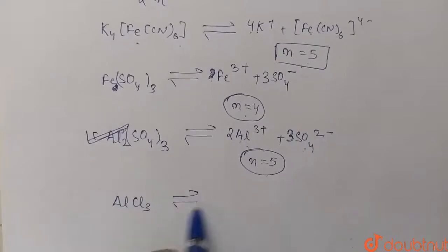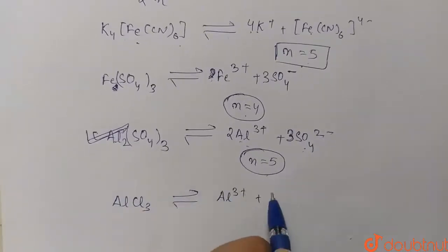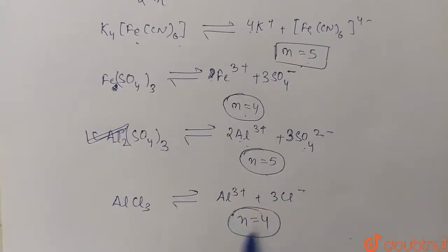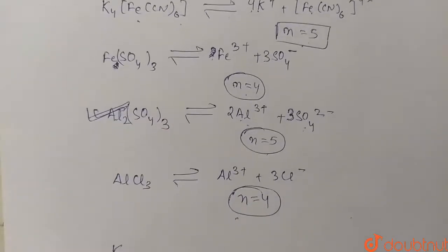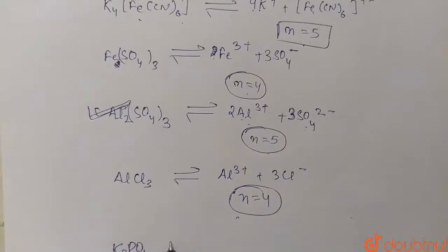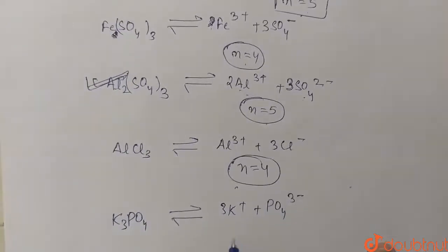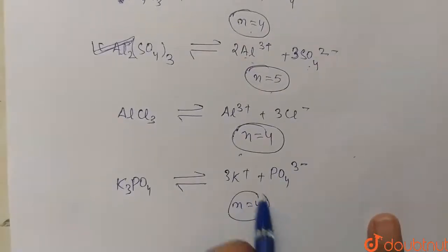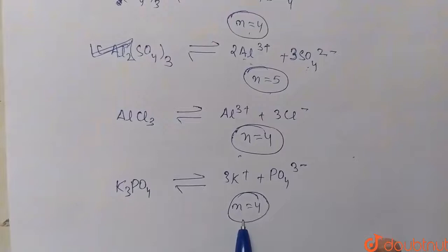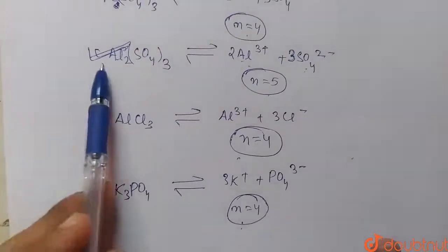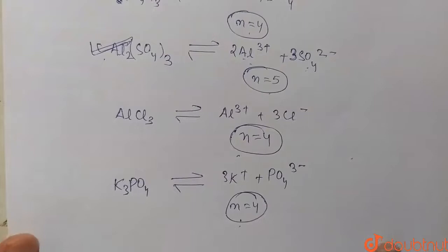Option C: AlCl₃ dissociates into Al³⁺ and 3Cl⁻, so n equals 4. Option D: K₃PO₄ dissociates into 3K⁺ and PO₄³⁻, so n equals 4. Both are not equal to 5. Therefore our only answer is option B, Al₂(SO₄)₃. I hope you understood the question — do practice this.